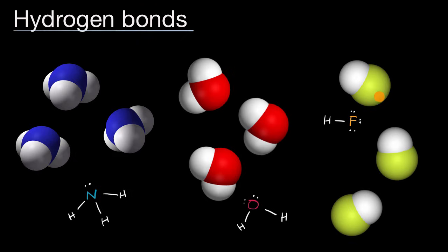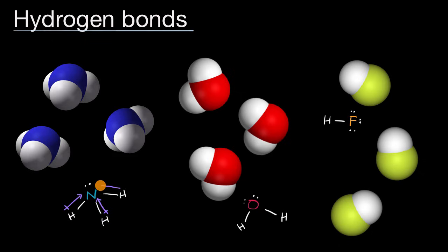The simple answer is, in each of these cases, you have hydrogen bonded to a much more electronegative atom. Even though these are covalent bonds, they're going to be polar covalent bonds. You are going to have a bond dipole moment that goes from the hydrogen to the more electronegative atom.